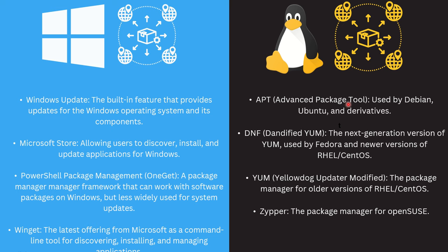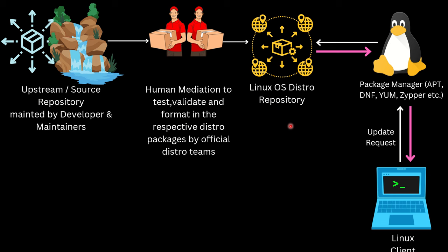On the Linux side, you have package managers, which are what Linux distributions use to update the OS, applications, and libraries. For example, on Debian/Ubuntu or Kali you use the 'apt' command; on Red Hat you use 'yum'; on SUSE you use 'zypper'. Using these package managers, you update all the applications and libraries on your Linux system, and even the OS itself.